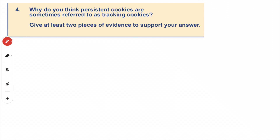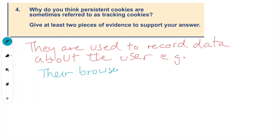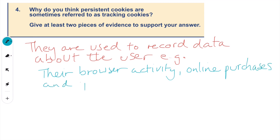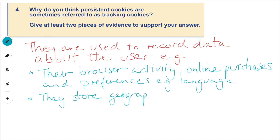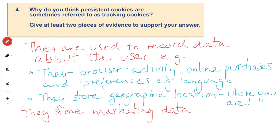Finally, question four: why are persistent cookies sometimes referred to as tracking cookies? Give at least two pieces of evidence. They are used to record data about the user — for example, browser activity, online purchases, and preferences such as language. They store geographic location, basically tracking where you are. And finally, they store marketing data, which allows specific adverts to be directed at you.